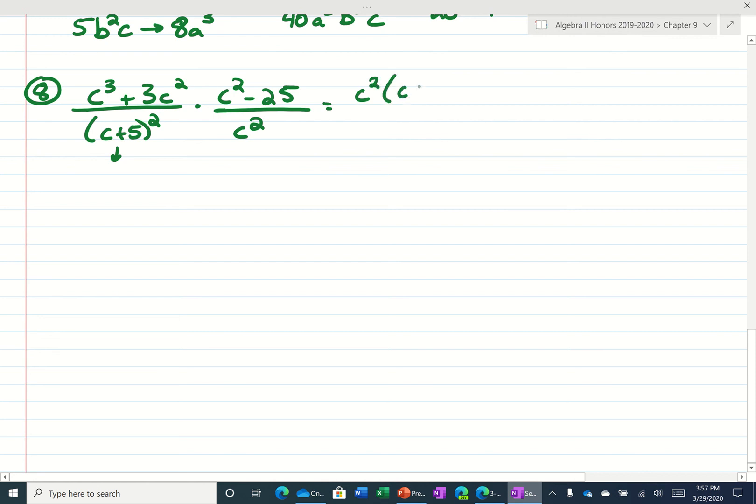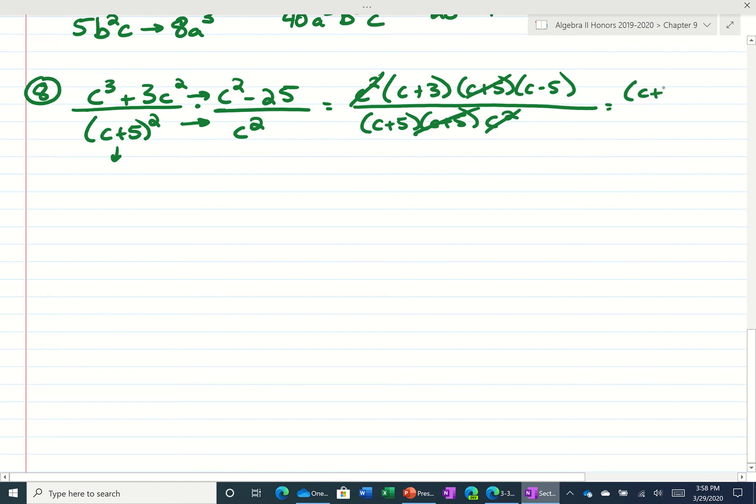So we can take out a c squared. We're left with c plus three. And then if we're multiplying, I'm just going to go ahead and combine these numerators and denominators. That would factor to be c plus five times c minus five. And the bottom, I'm going to write c plus five twice. And then the c squared. C squared's cancel, c plus five, c plus five. And we wind up just being left with c plus three times c minus five, all divided by c plus five.